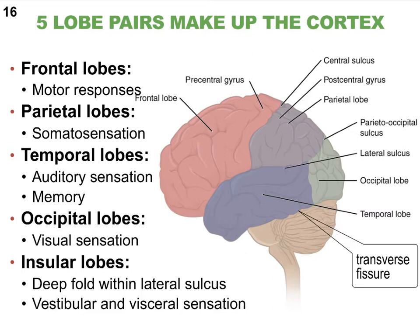Remember how your brain had to fold up to fit in the skull? So some of the cerebral cortex is actually folded inward, deeper to what we can see superficially. One thing students have missed very often is the fact that there are five pairs of lobes, so don't forget the insular lobes.